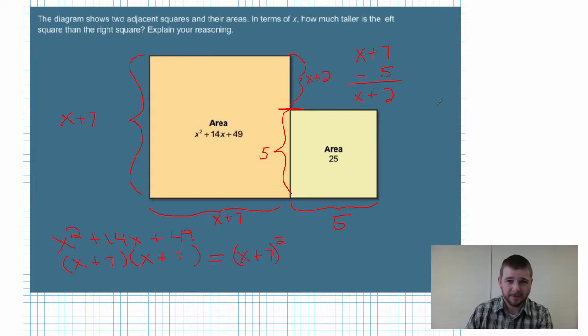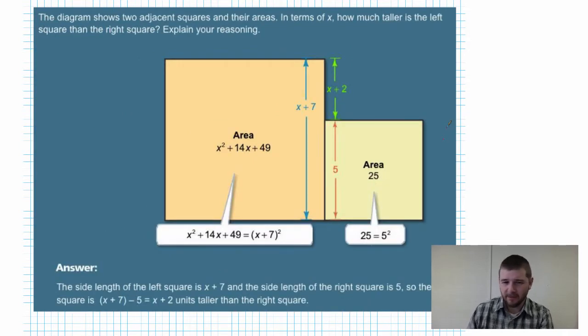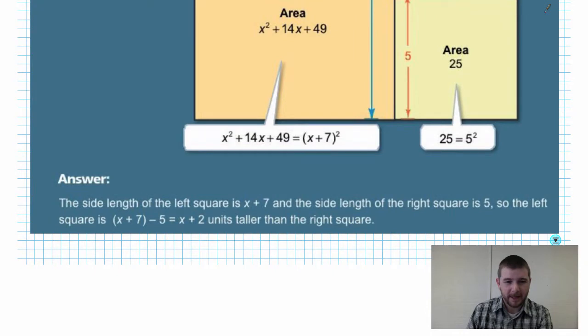So our solution is x + 2 units. Here's the book's example of this problem as well as the book's solution, and you can take a moment to check it out. But the book's answer at the bottom: the side length of the left square is x + 7 and the side length of the right square is 5, so the left square is x + 7 minus 5, and that's equal to x + 2 units taller than the right square. Fantastic.